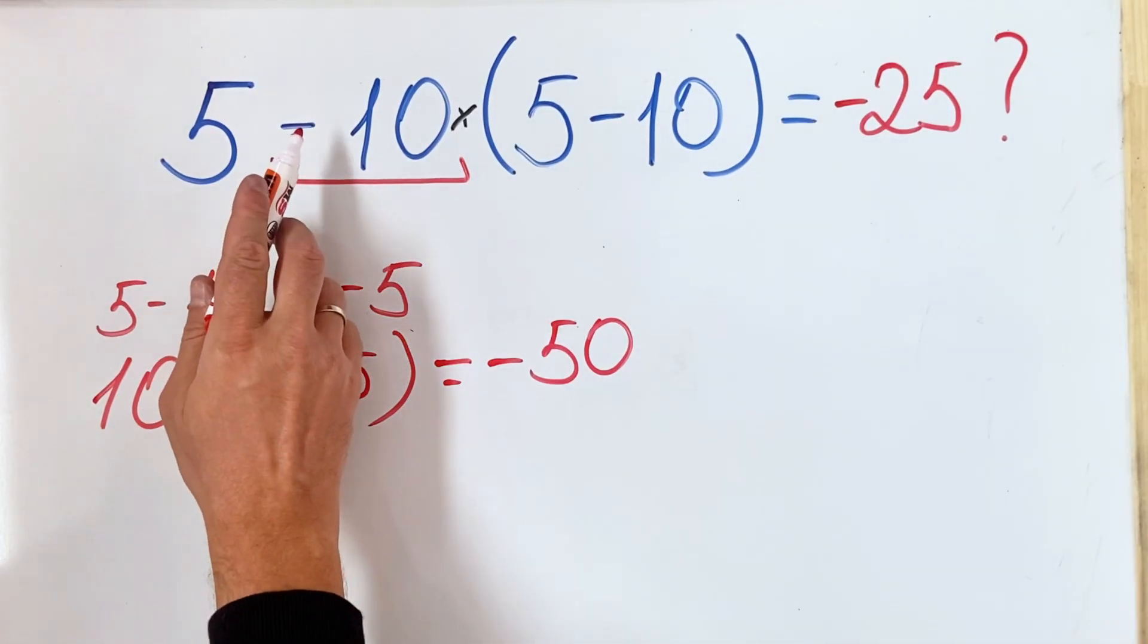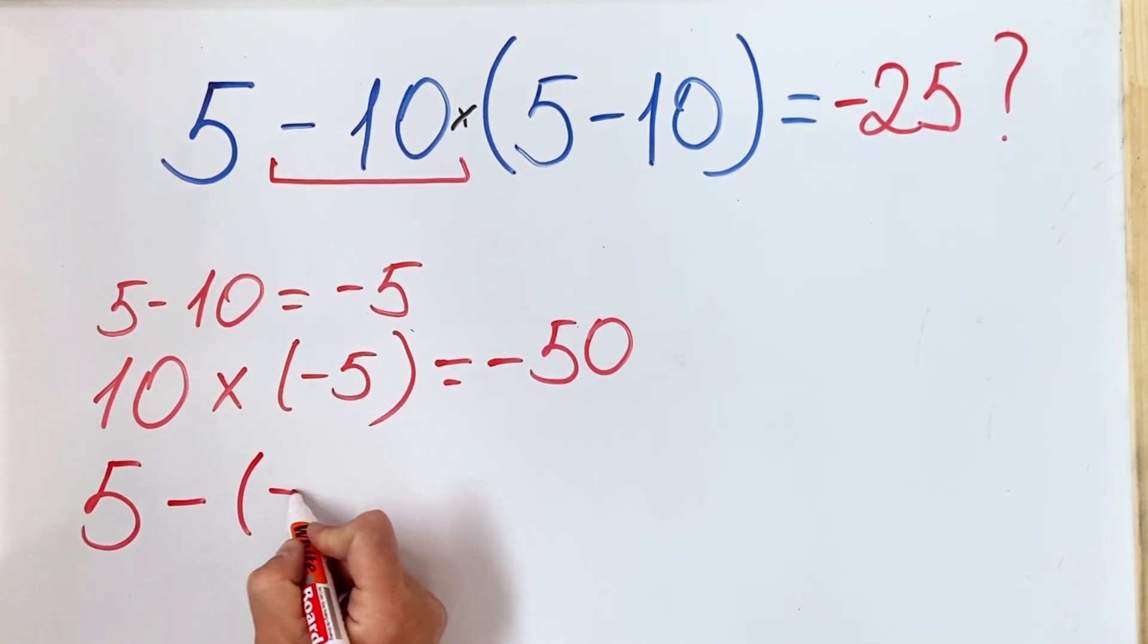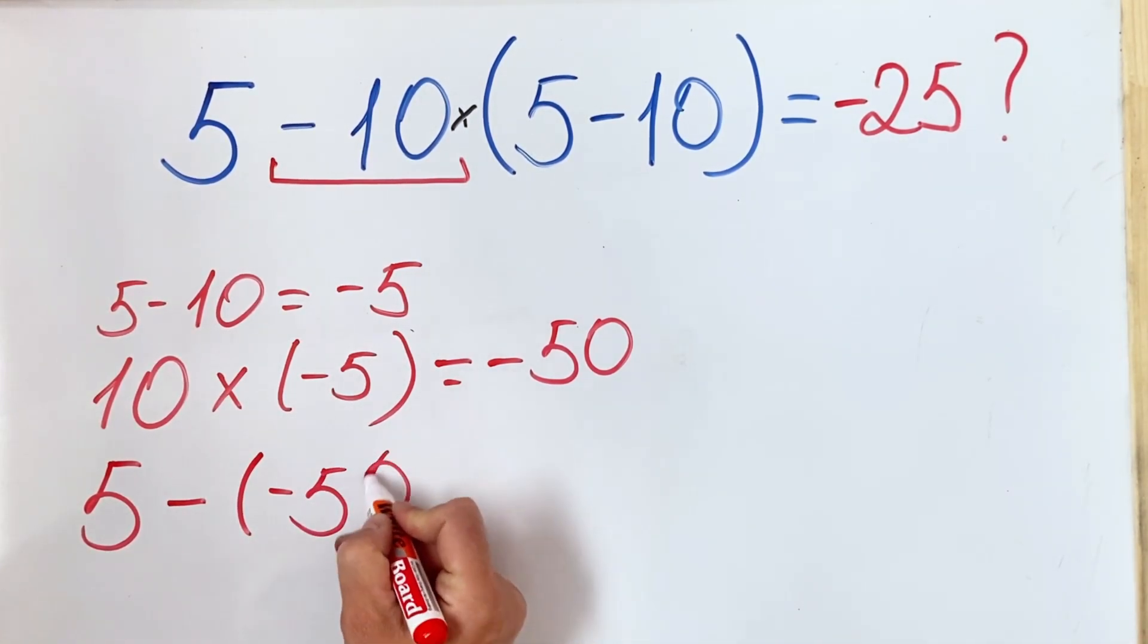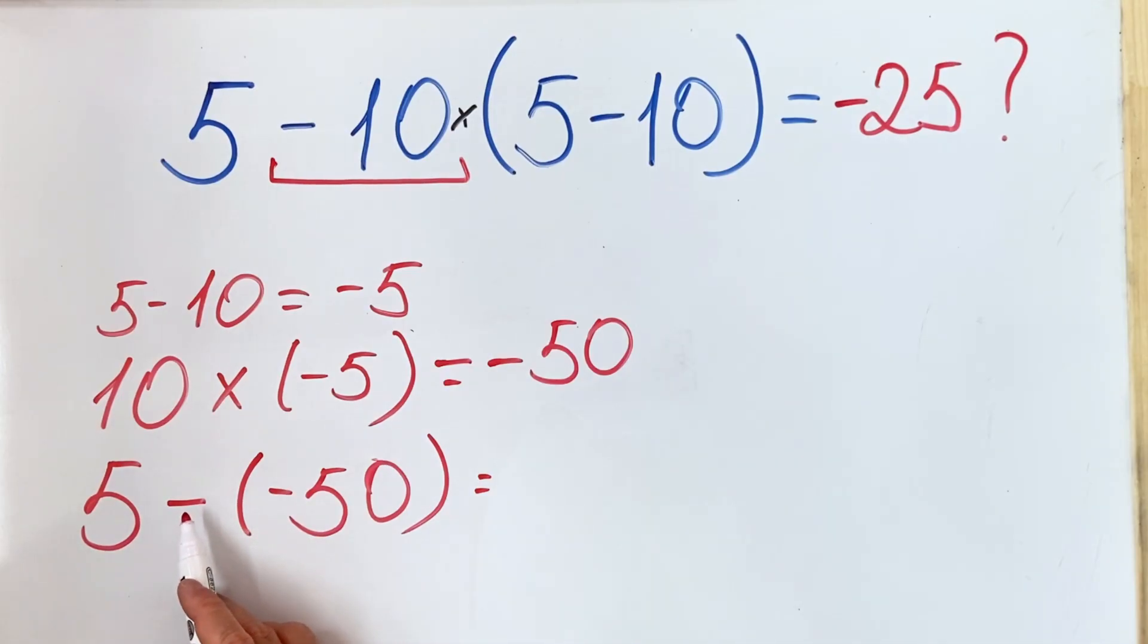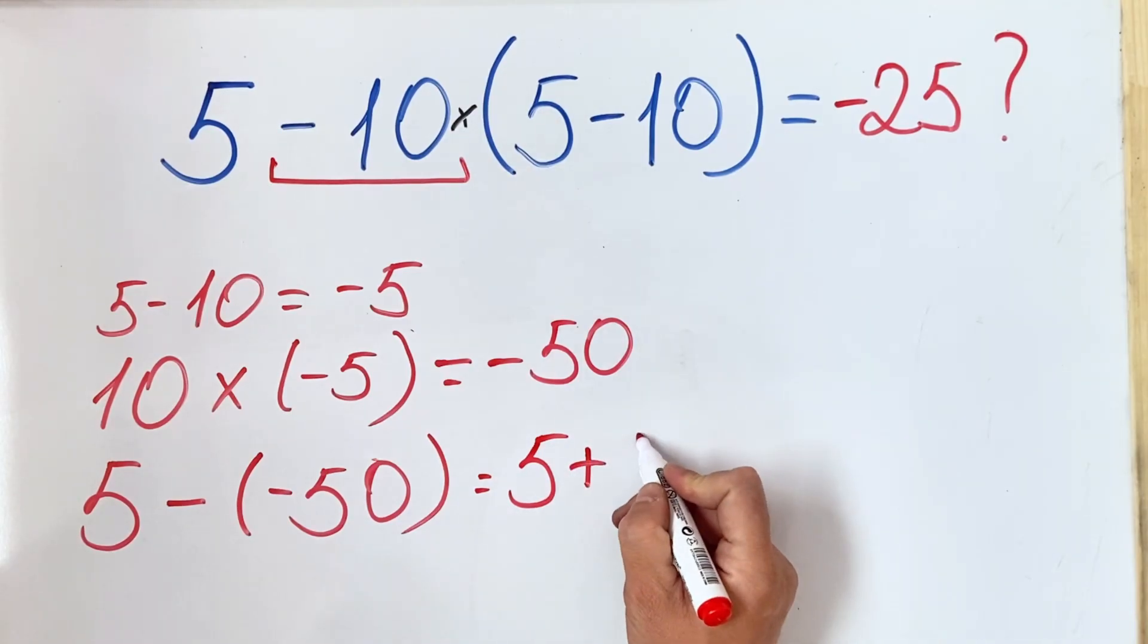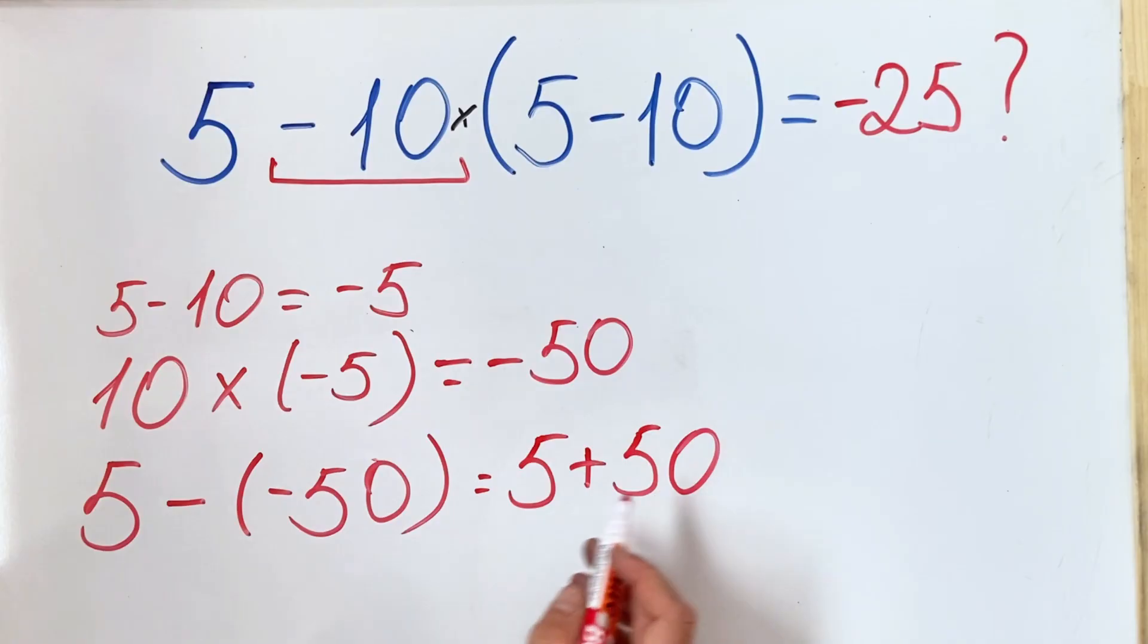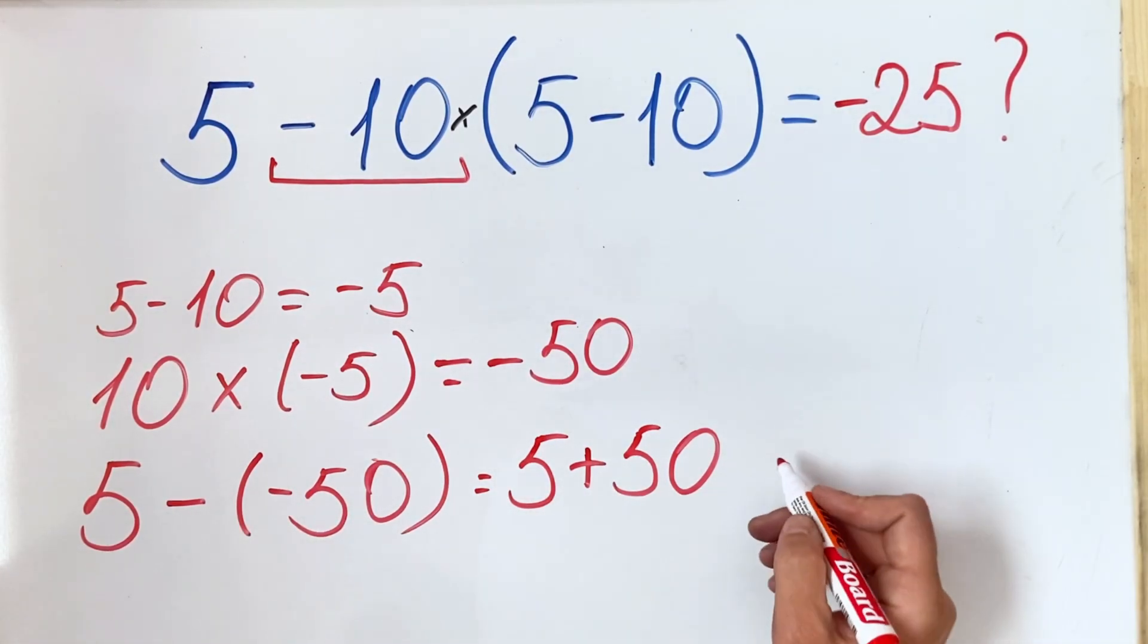The last one, we need to do the subtraction, so the last operation is 5 minus minus 50. We all know when we have a subtraction from a negative number, we get the addition of that specific number. So we have 5 plus 50, minus and minus change to plus, and the result would be 55.